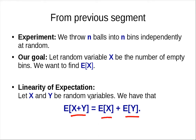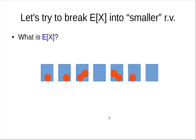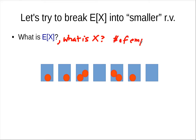This allows us to decompose random variables into smaller ones and deal with each individually. So let's try to break the expected value of X into smaller random variables. What is X? X is the number of empty bins.